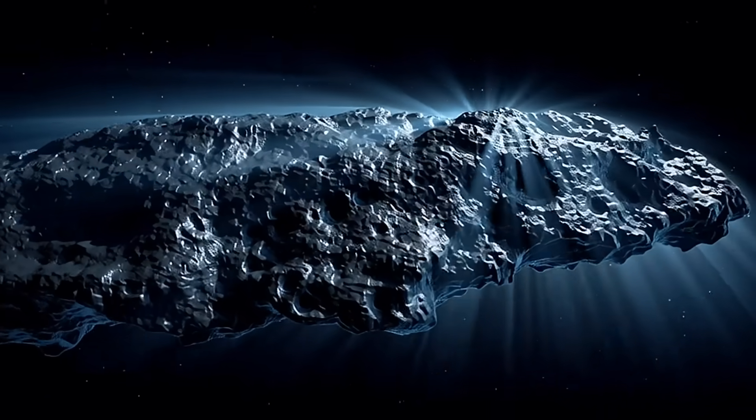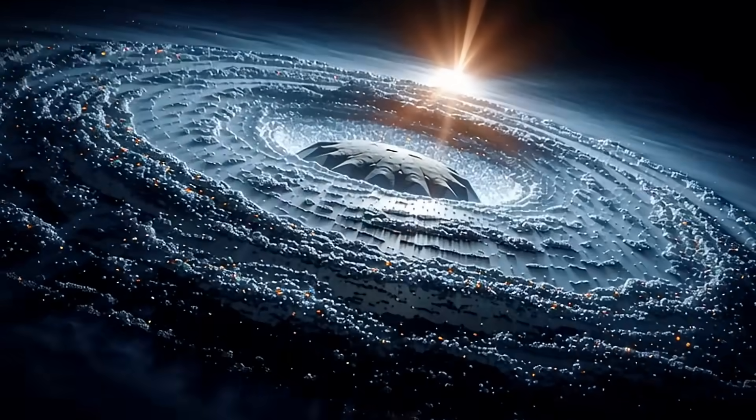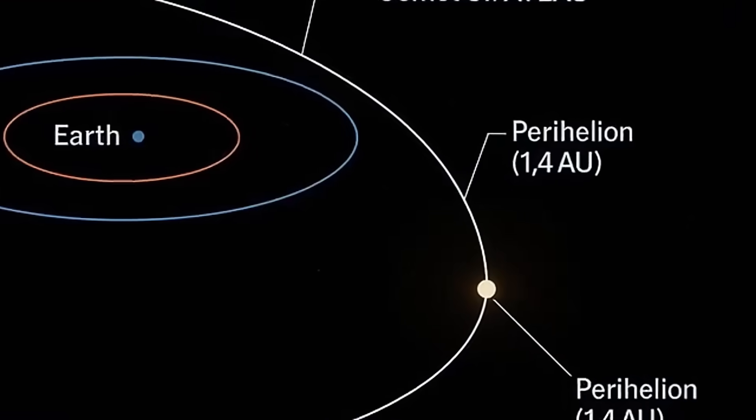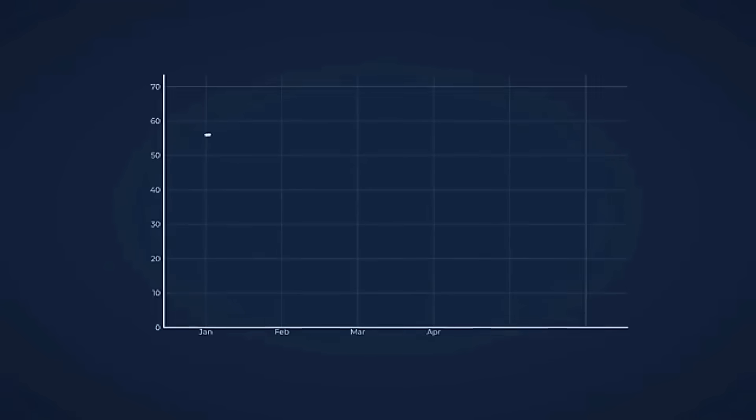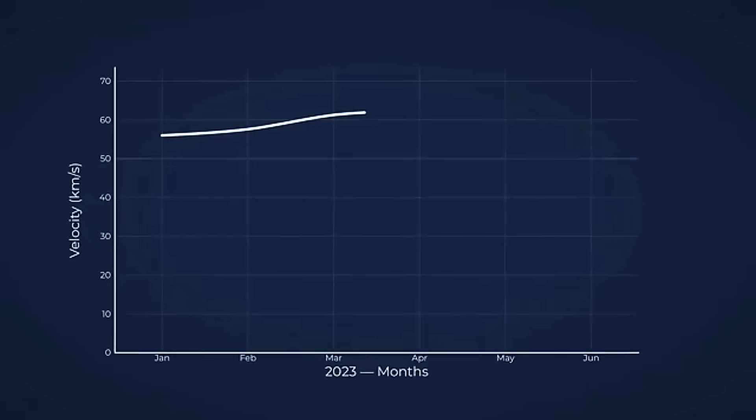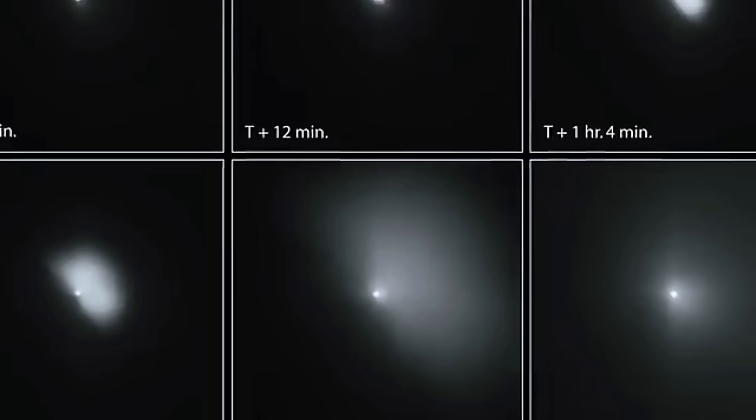For an object coming from deep interstellar space, where directions should be completely random, this precise alignment is extraordinary. The ecliptic plane is where all planets orbit, and natural objects from other stars shouldn't know about this specific orientation. It's as if the object had been deliberately directed to follow the rules of our solar system.